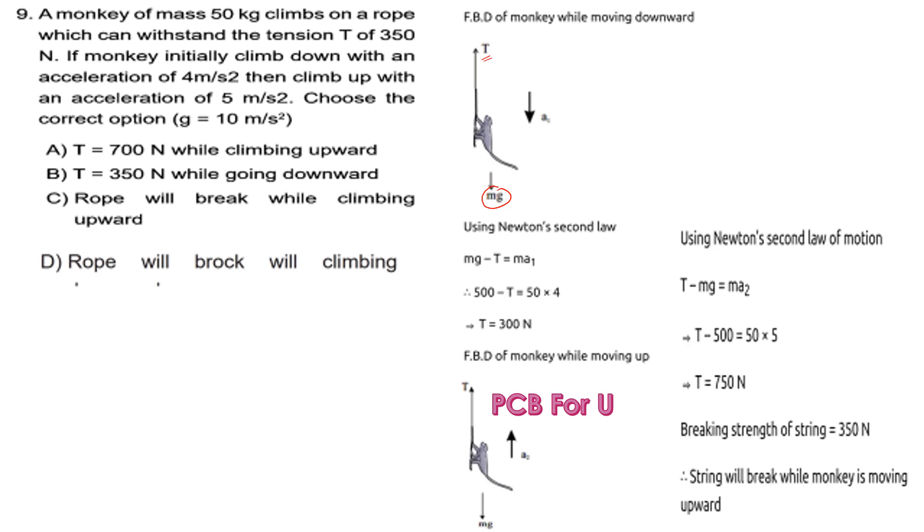The free body diagram of the monkey moving downward shows the weight acting downward as Mg and the tension exerted by the rope upward. There is a downward acceleration.